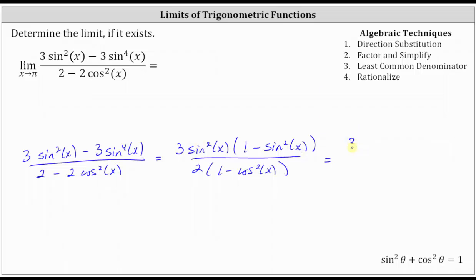In the numerator, we have three times sine squared x, and then one minus sine squared x is equal to cosine squared x. In the denominator, we have two times the quantity one minus cosine squared x, and we can substitute sine squared x for one minus cosine squared x.